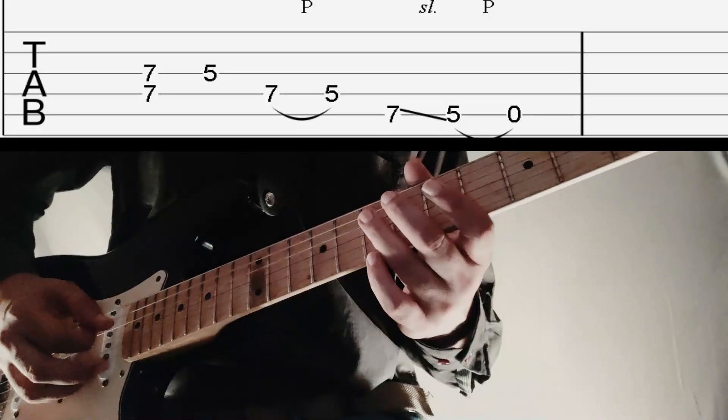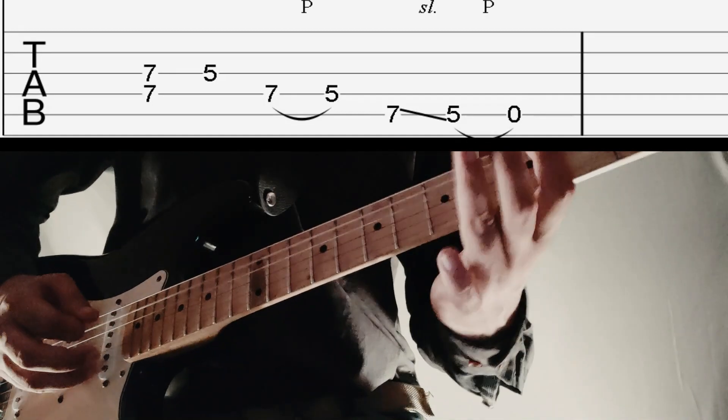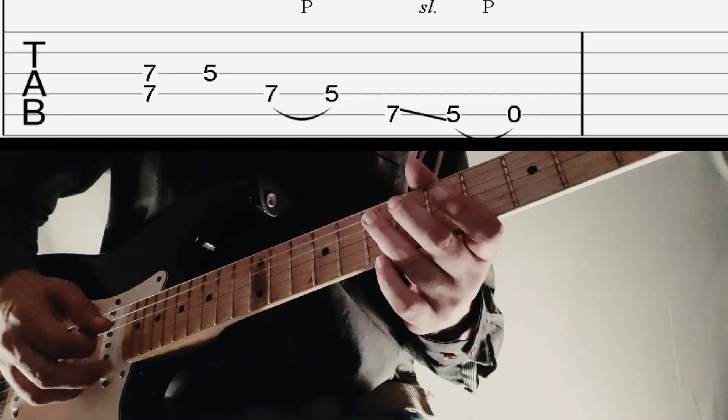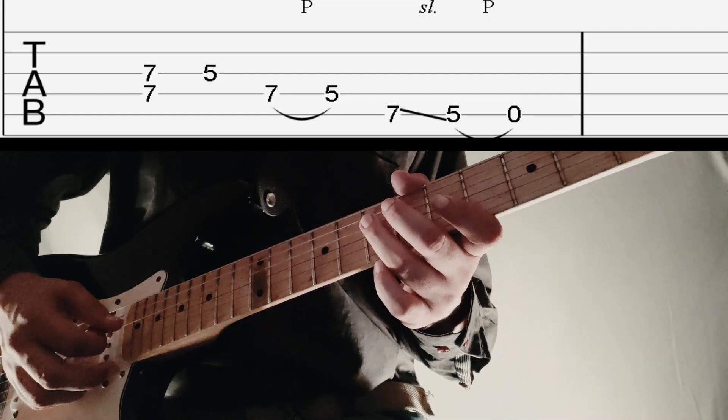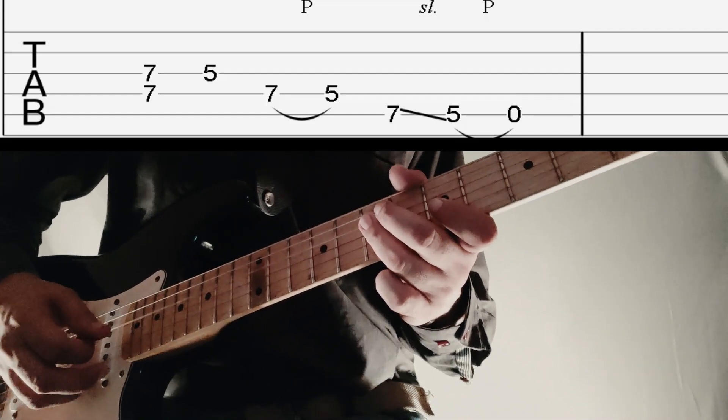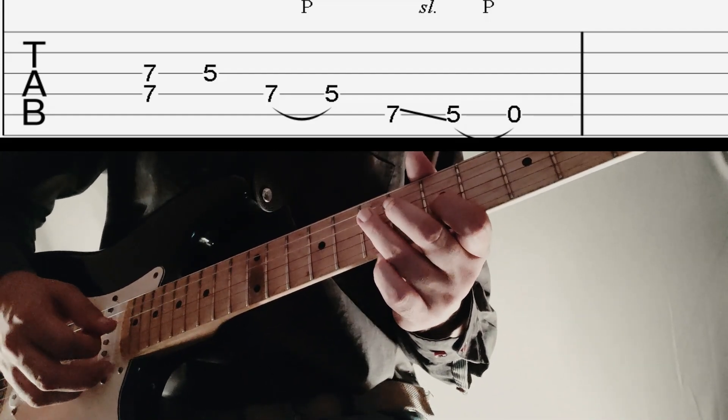Let's start with section 4. We'll first begin with a bar on 7th fret 3rd and 4th string followed by 5 on G string.